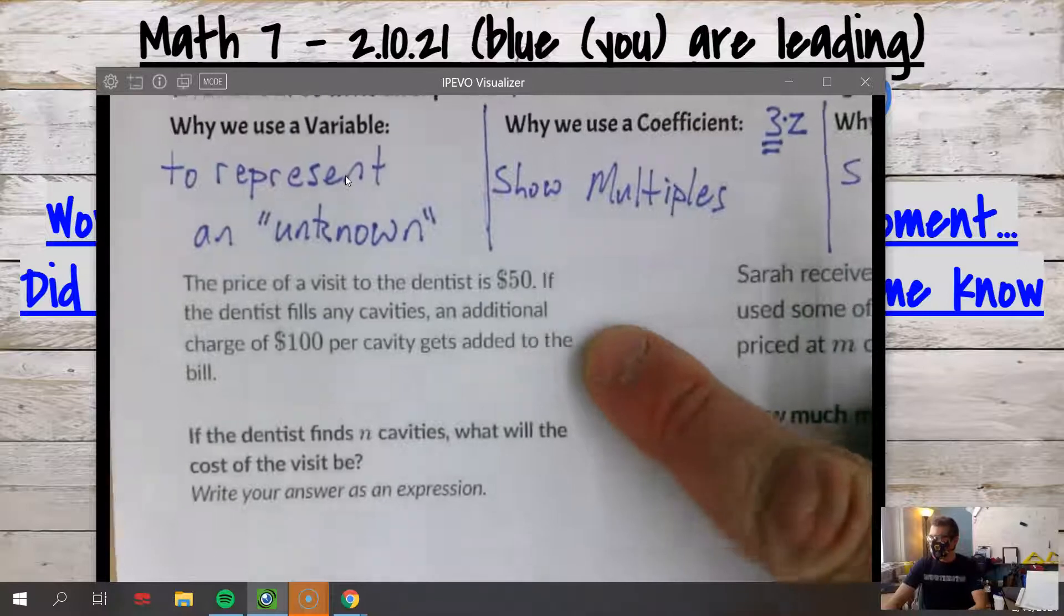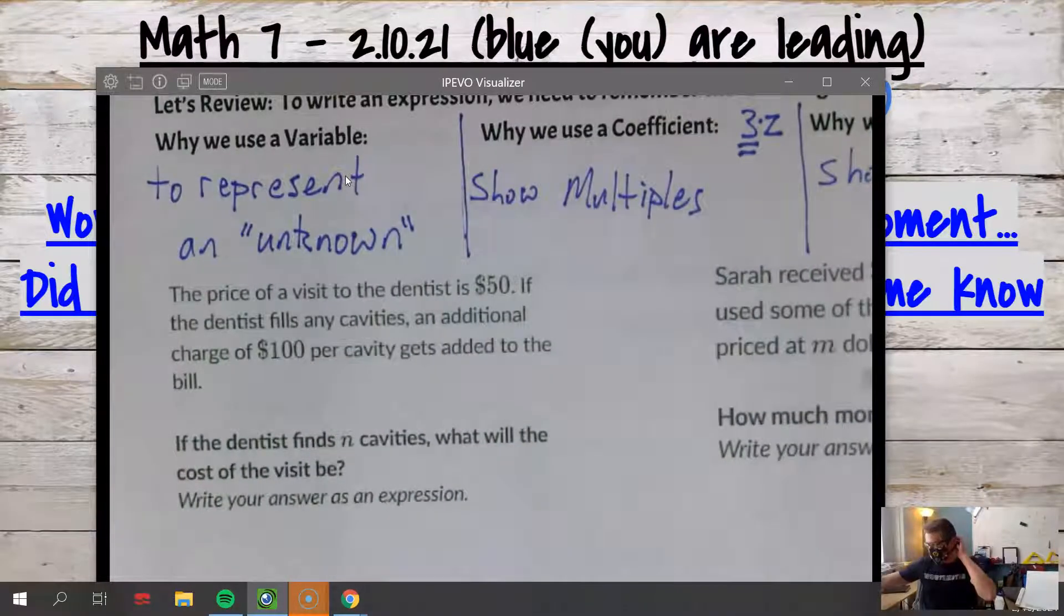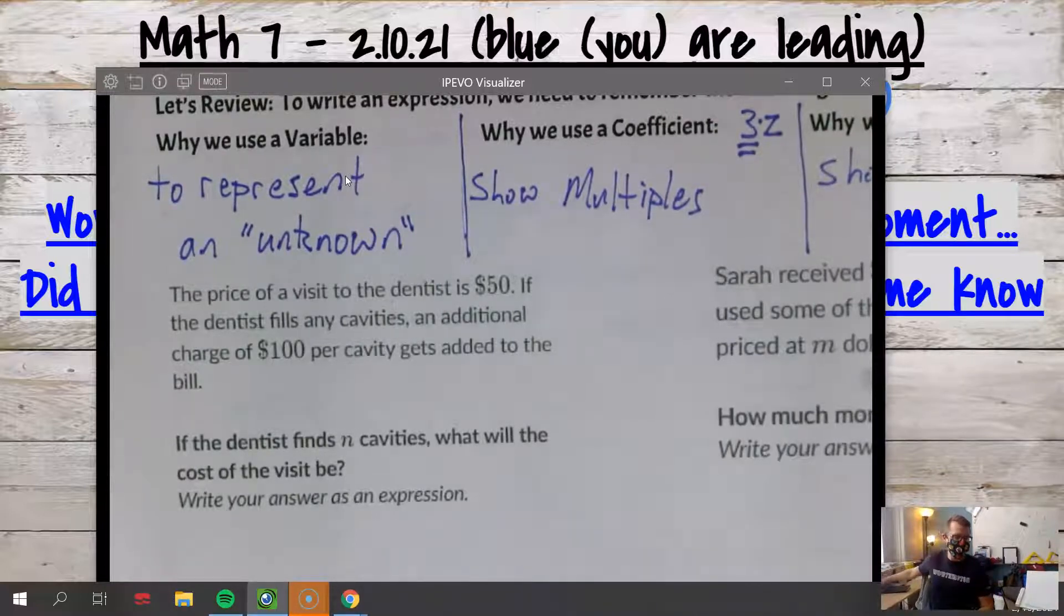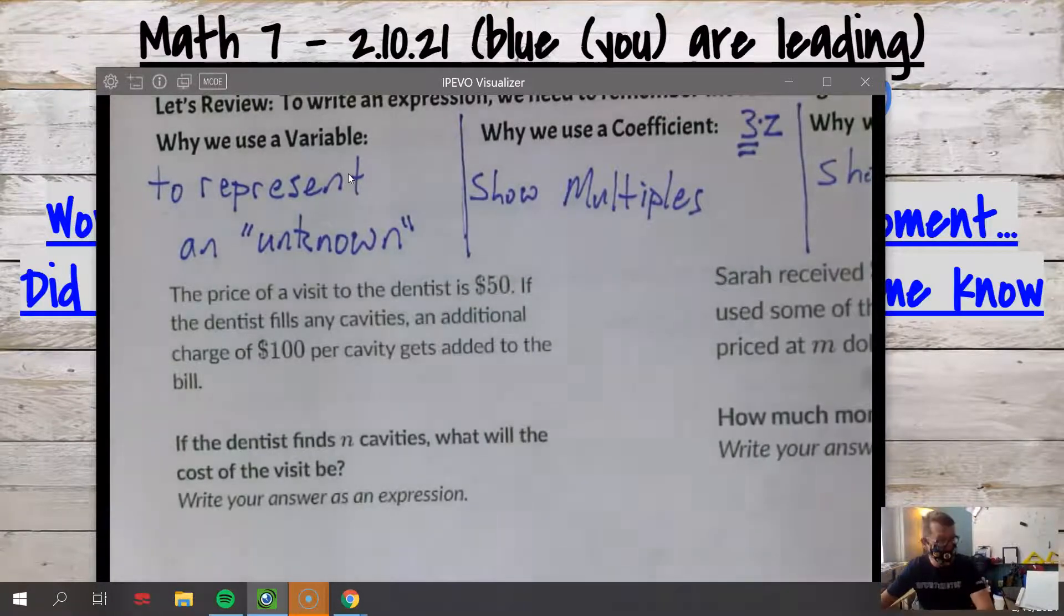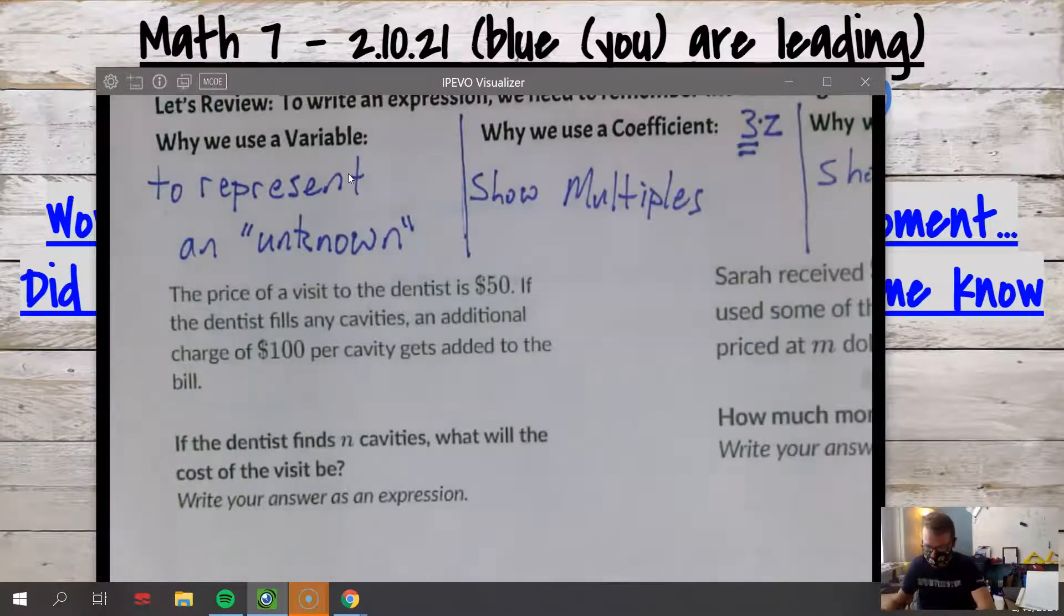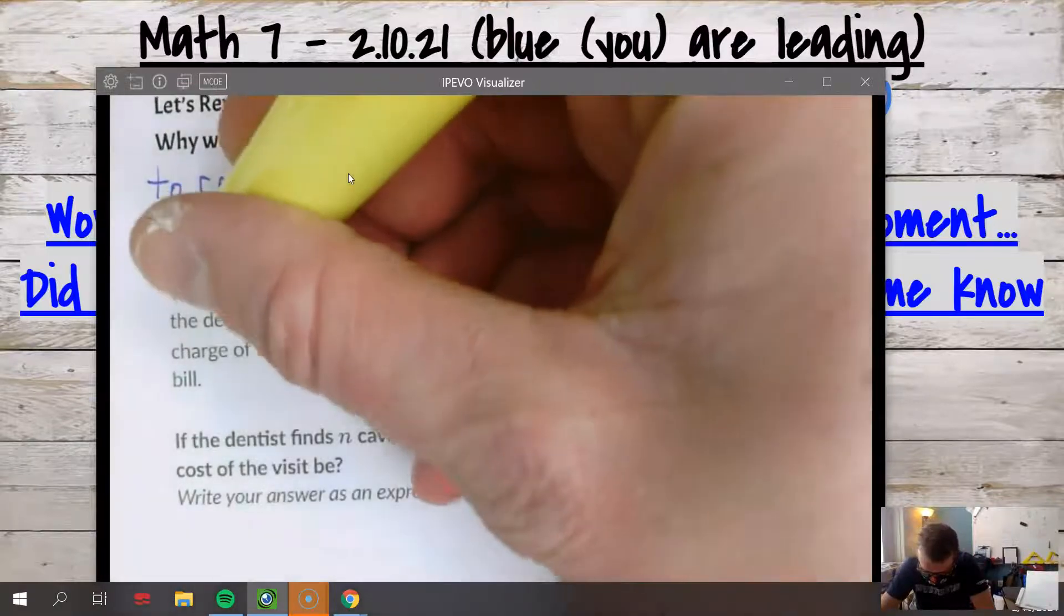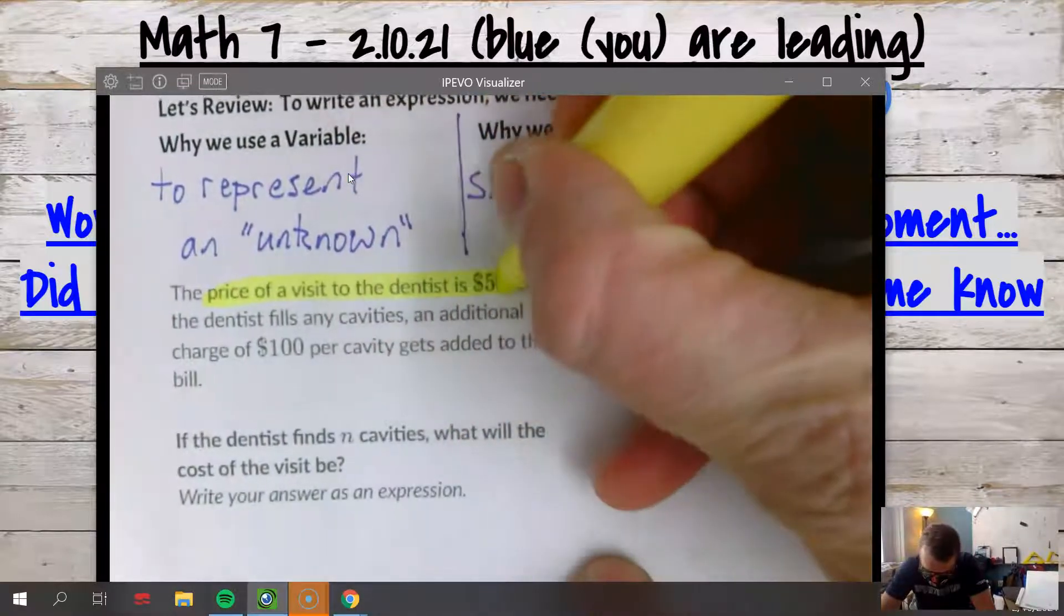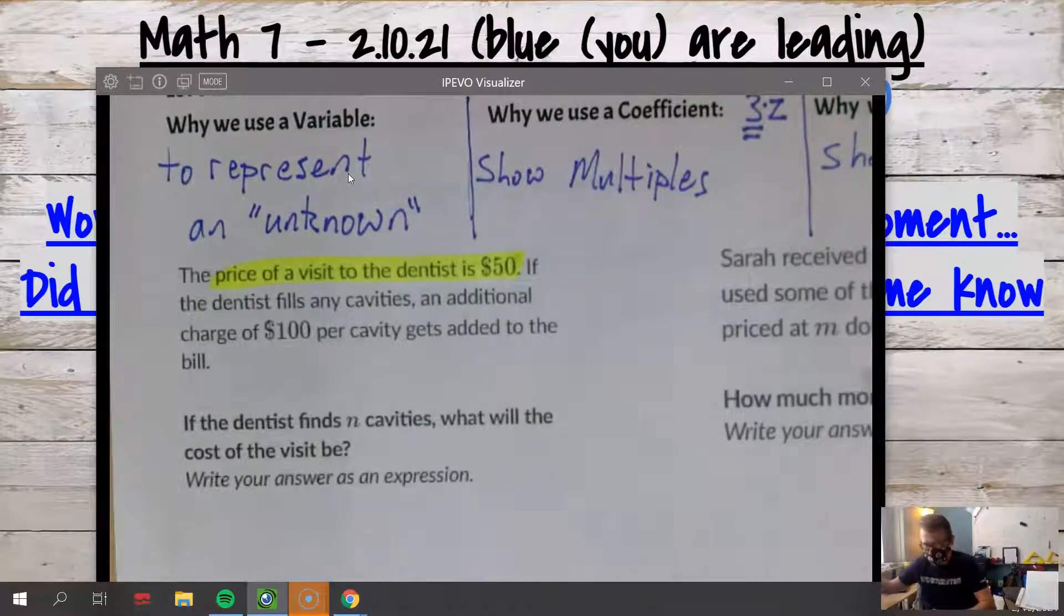All right, so take a moment, look at this. This is now what we're doing in Khan Academy, if you are up to date on your homework. If you're behind and you're like 'I haven't seen this yet,' yeah, it's because you're behind. Take a moment and highlight or underline the important pieces of this and try to figure out: does this thing happen once, or could it happen multiple times?